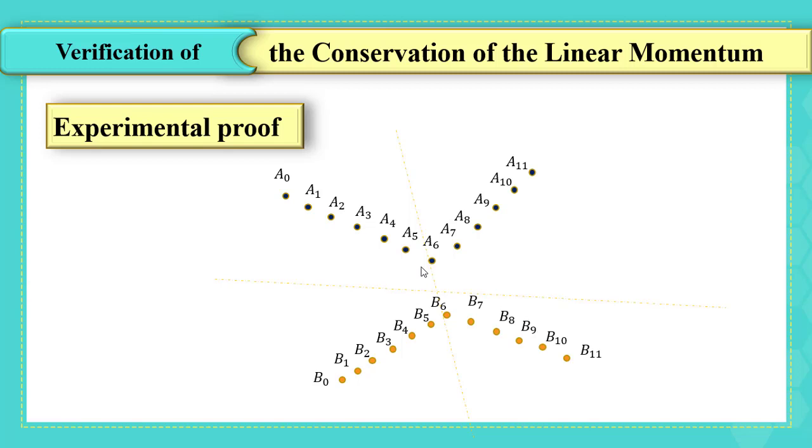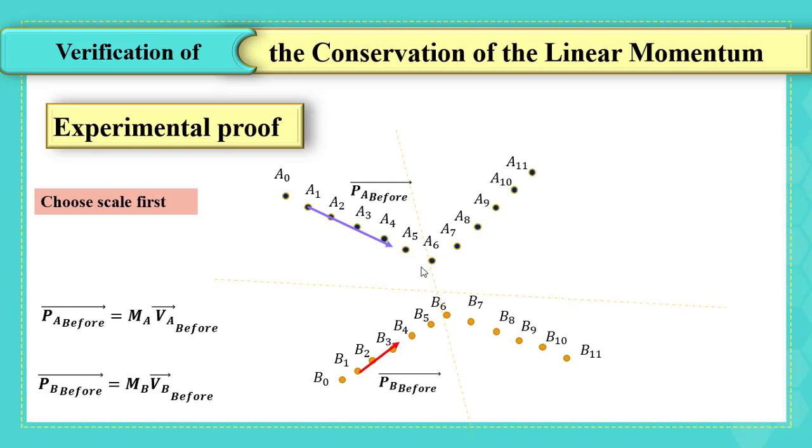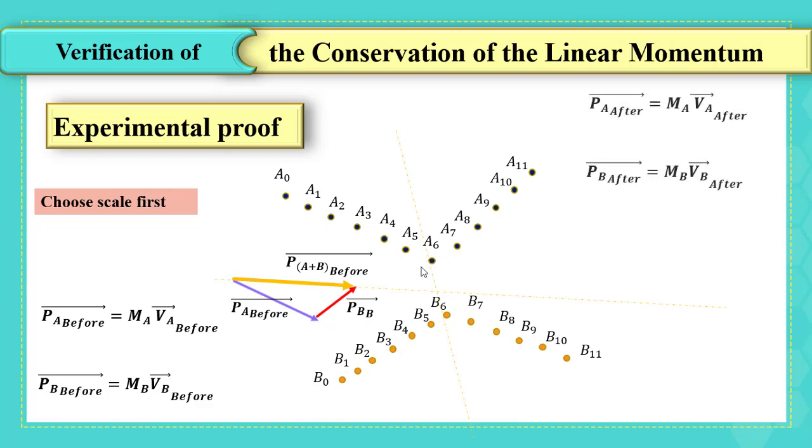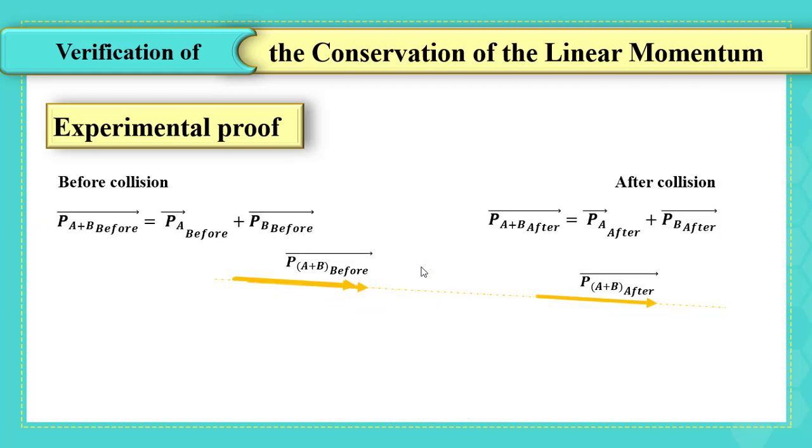Remember that the linear momentum of A and B are vector quantities, and they are non-collinear vectors. Hence, we should represent their vectors considering a scale. Measuring the linear momentum of the system before collision means adding vectors. We represent the vectors of linear momentum of A and that of B before collision and after collision, then add them as vectors. So we find that the two measured vectors before and after collision have same magnitude and same direction. Thus, the linear momentum is conserved.